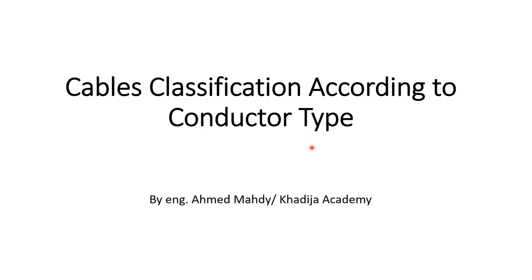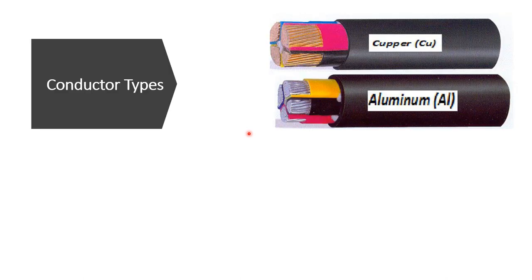In this lesson, we are going to discuss the classification of cables according to the conductor type. There are two main types of conductors used in cables: the first one is aluminum (Al) and the second one is copper.